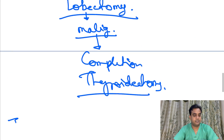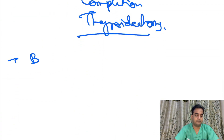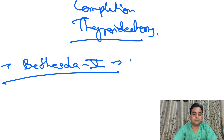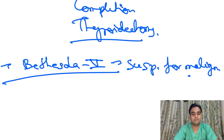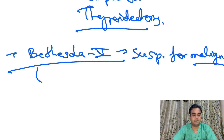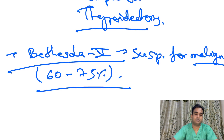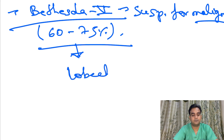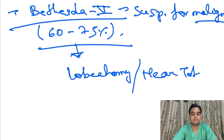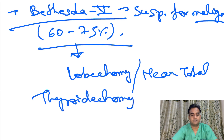Bethesda 5 is suspicious for malignancy. The chance of it being malignant is 60 to 75 percent, which is a huge risk. In this case, you will do either lobectomy or near-total thyroidectomy.